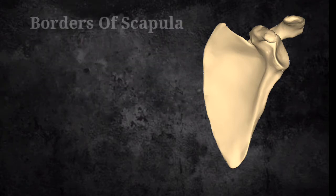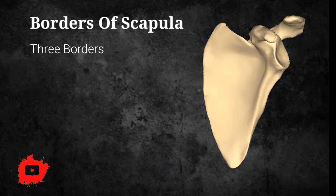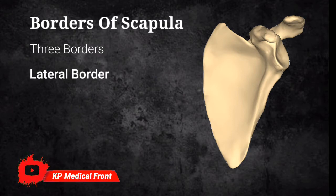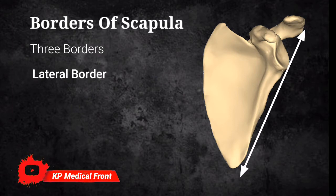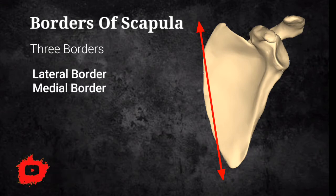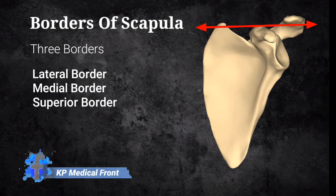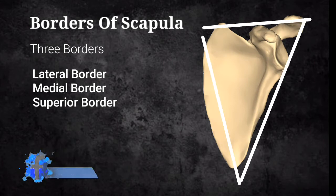The borders of the Scapula Bone: there are three borders, which are named as the lateral border, which is present on the lateral side; the medial border, which is close to the median plane of the human body; and the superior border, which is present on the top. All three borders make a triangular-shaped Scapula Bone.